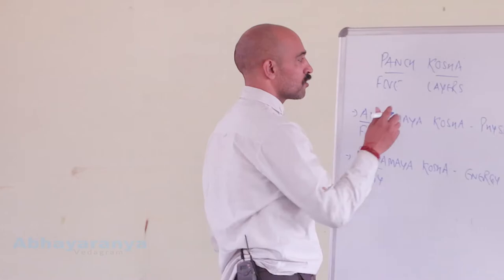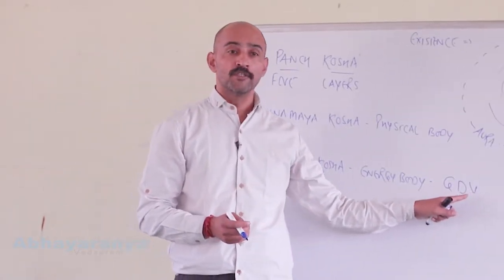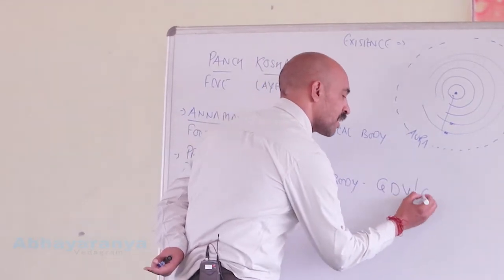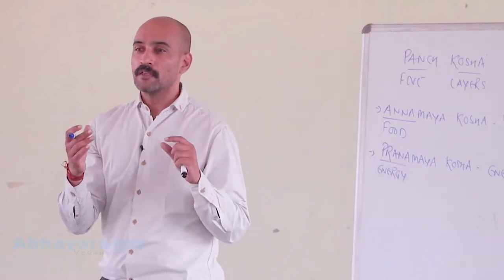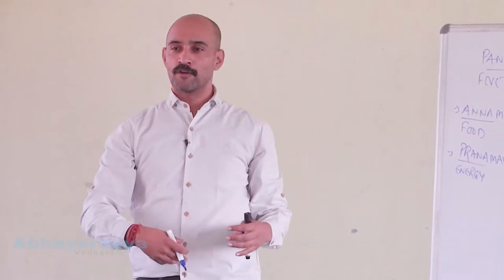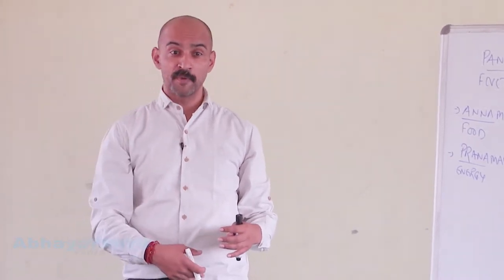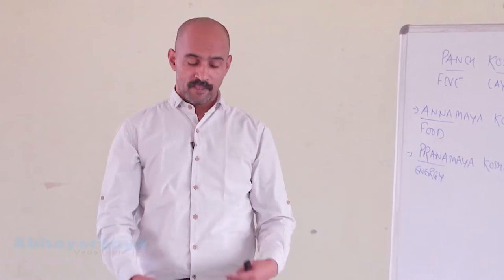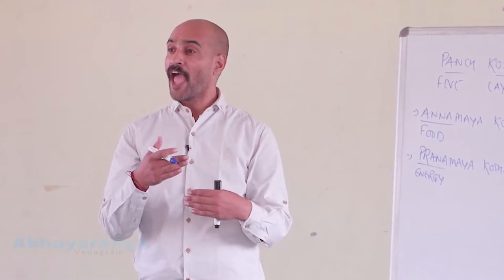That machine is known as GDV — Gas Discharge Visualization. You can search for GDV cameras on Google. Based on this, they analyze your chakras. When I used the machine and placed my fingers, a detailed analysis was done: whether your root chakra is in place, the second, third, fourth, fifth, sixth, seventh — and these researchers say this machine is the most vital health checkup available.